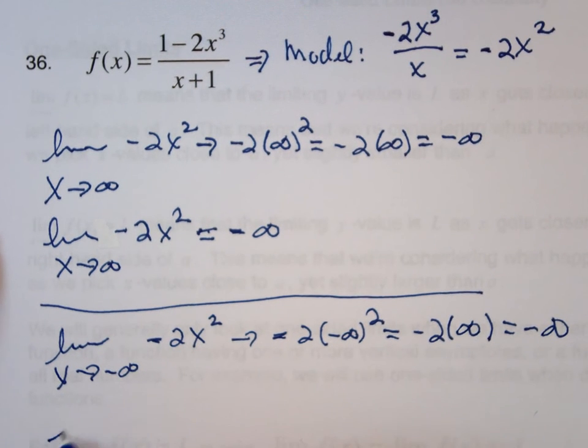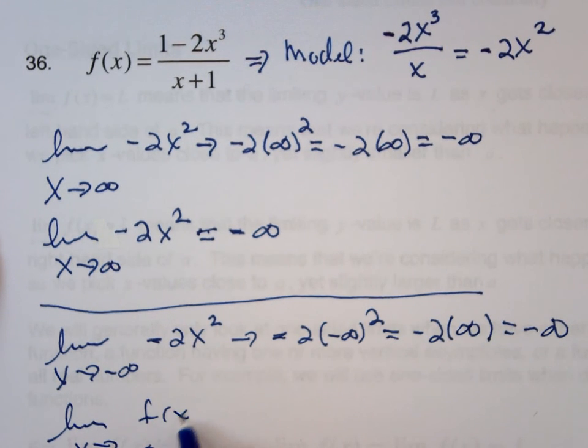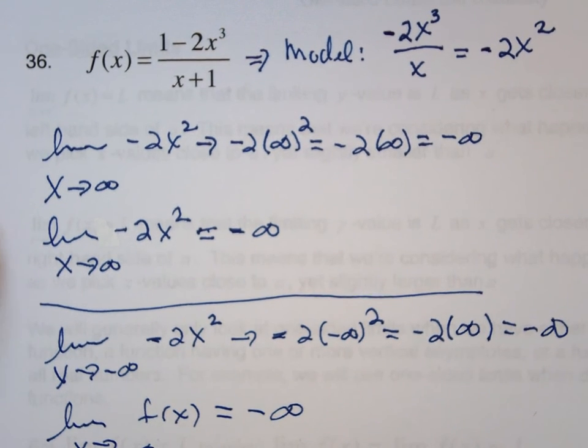So we can say that the limit as x approaches negative infinity of f of x, in this case, is negative infinity. So it's bottom, bottom.